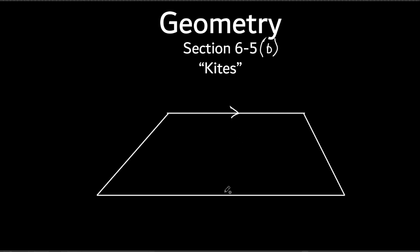So what must be true about a trapezoid? One set of parallel sides — very good. I made these two right here the parallel ones. Now we have a thing, and we've talked about this on a triangle, but this is the first time we're talking about it on a trapezoid. We're going to talk about the mid-segment.